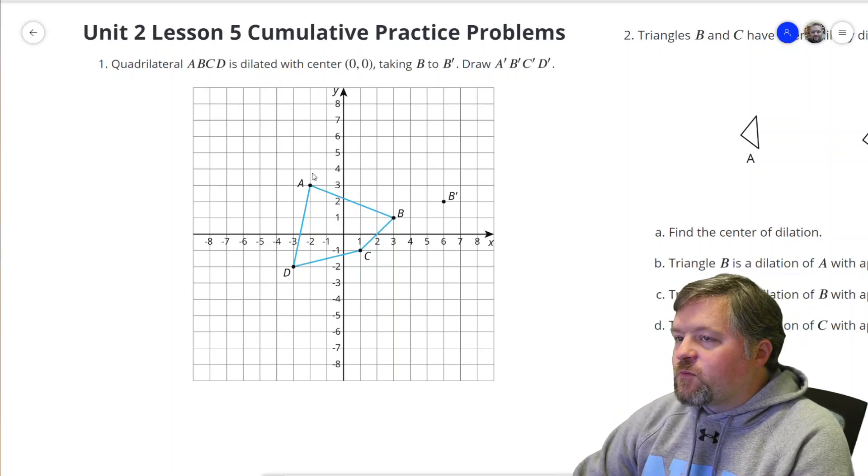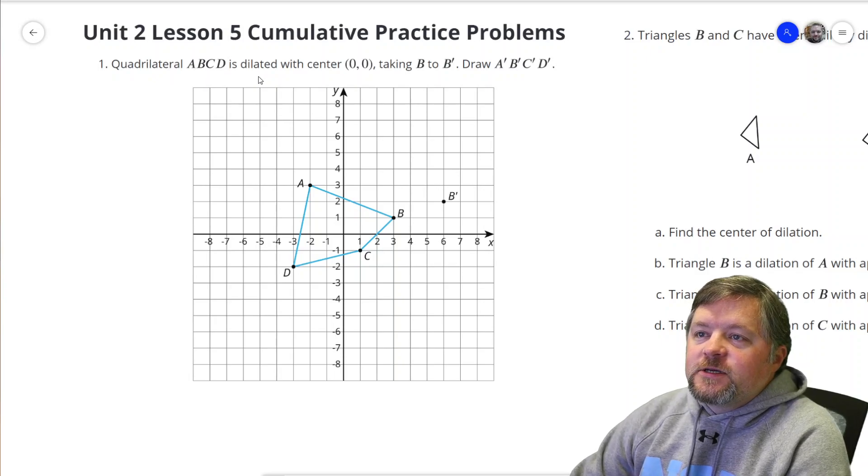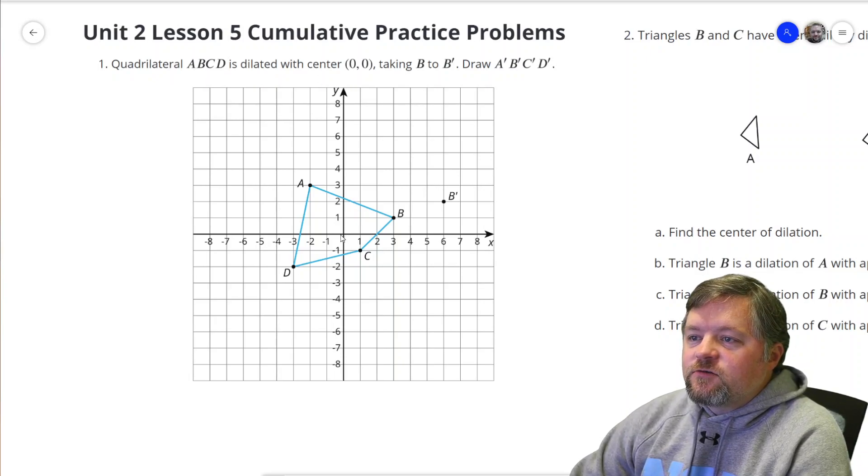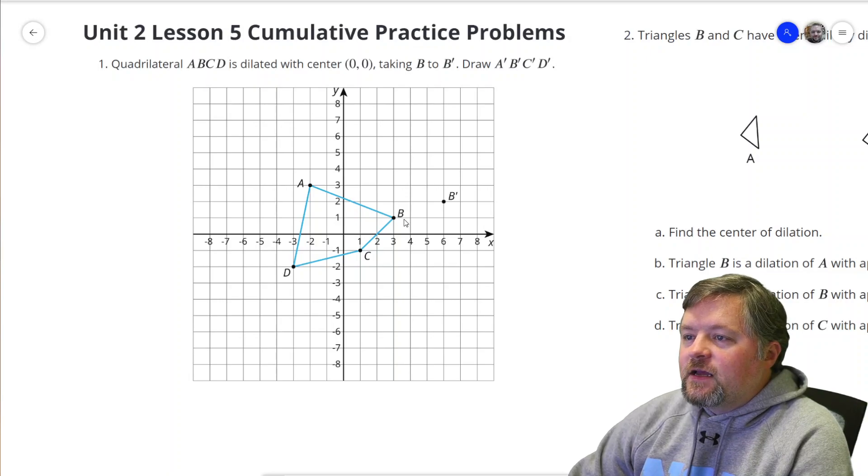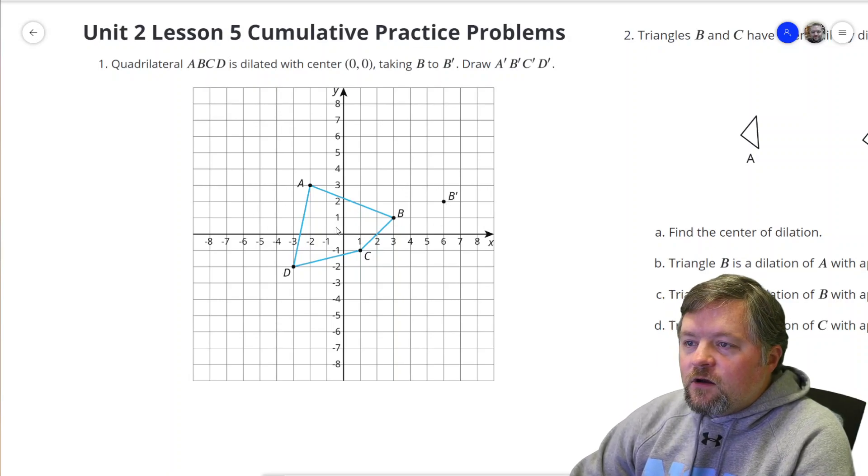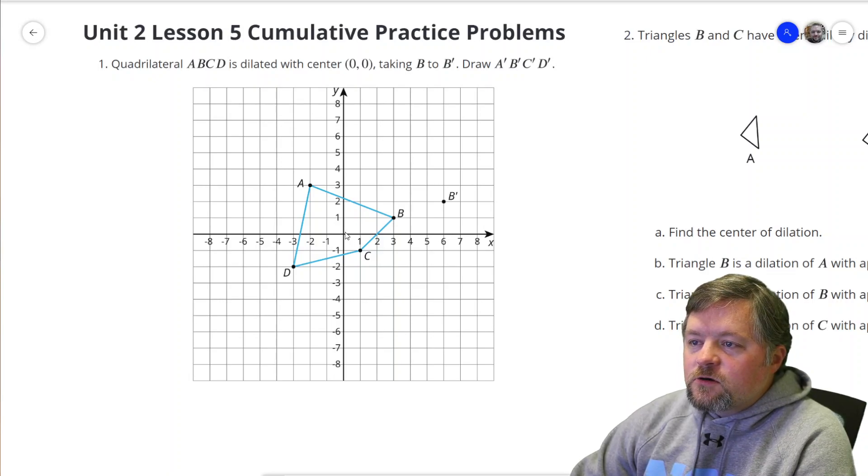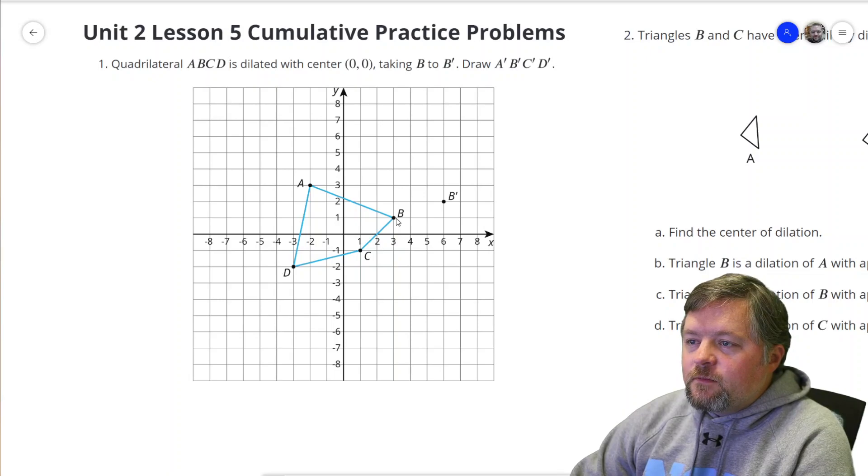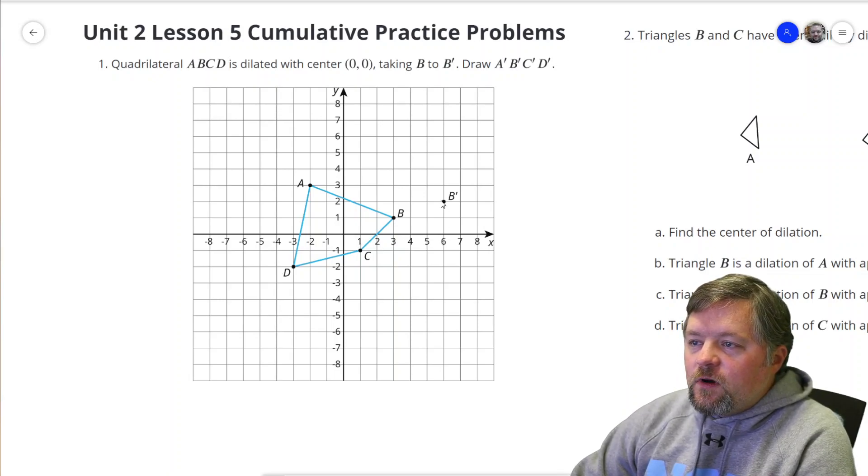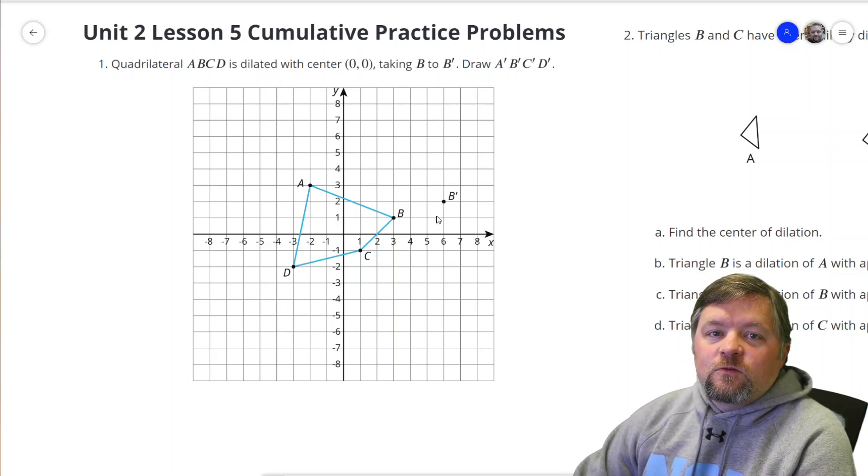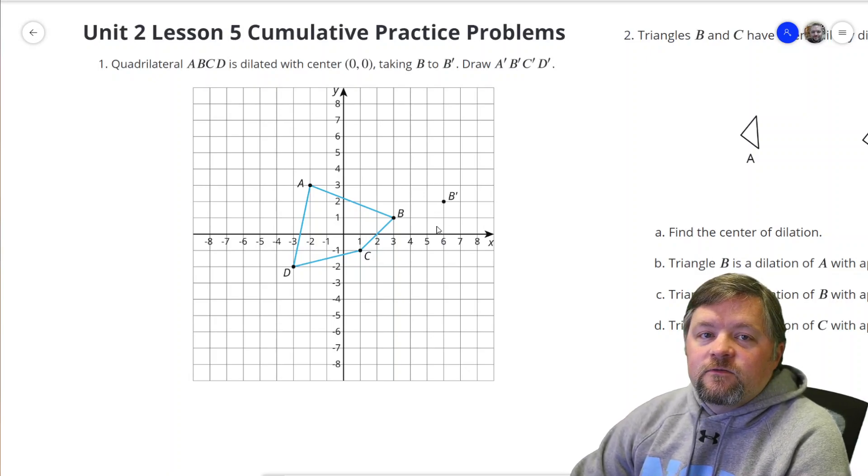Our first problem here says quadrilateral ABCD is dilated with center (0,0), the origin, taking point B to B'. The origin is here, B is here. We could figure out exactly how far away that is, or just know that it is 3 over and 1 up to B, and 6 over and 2 up to B', so we have a scale factor of 2.